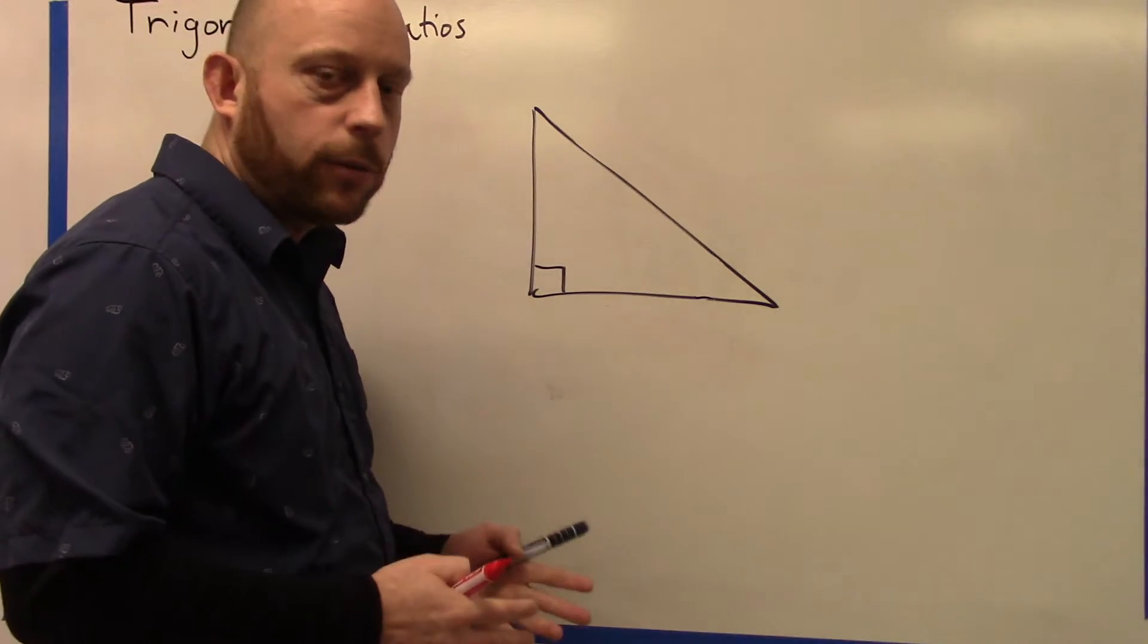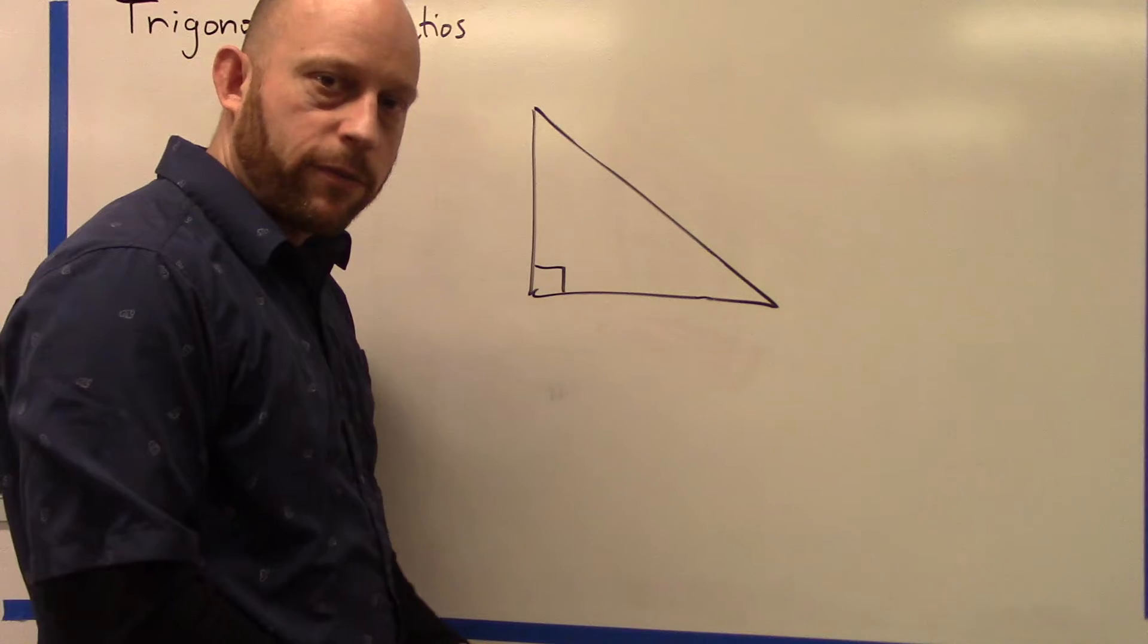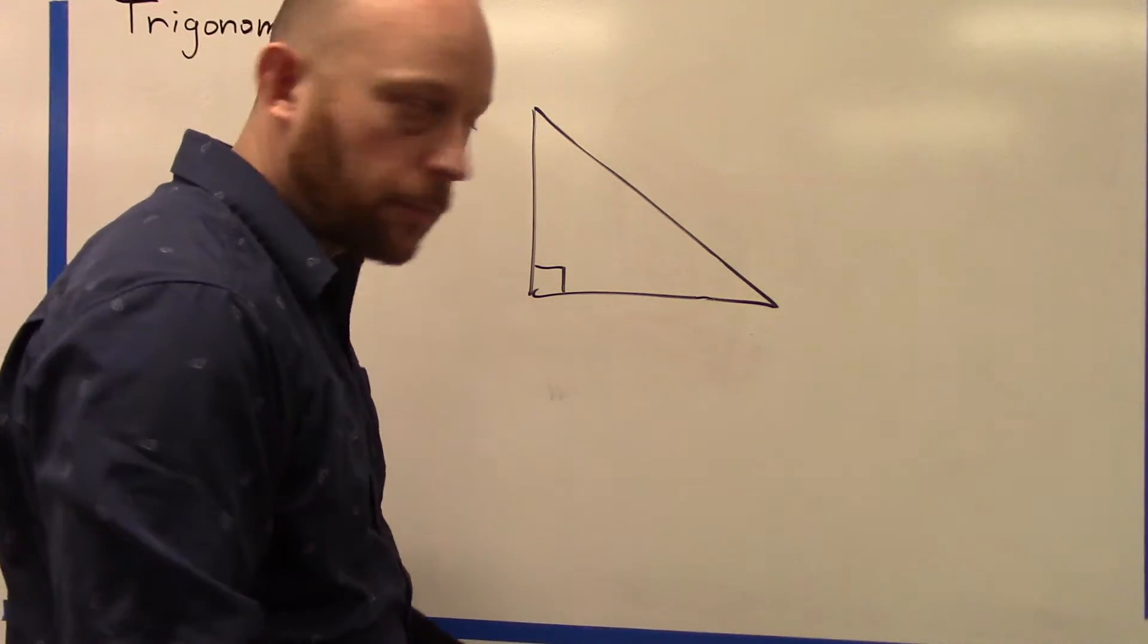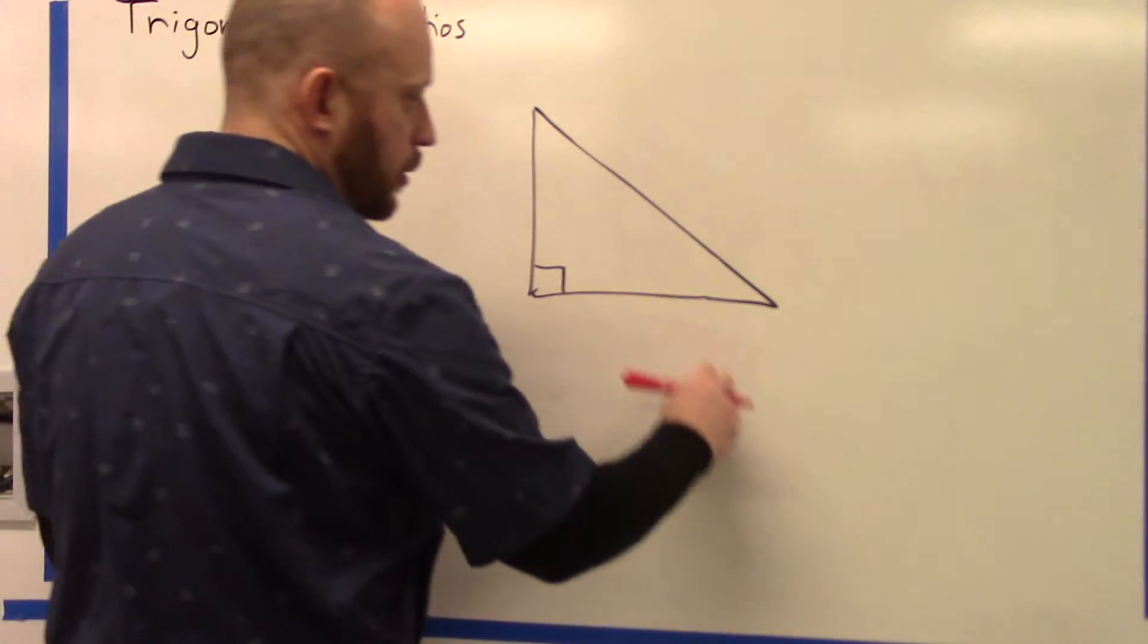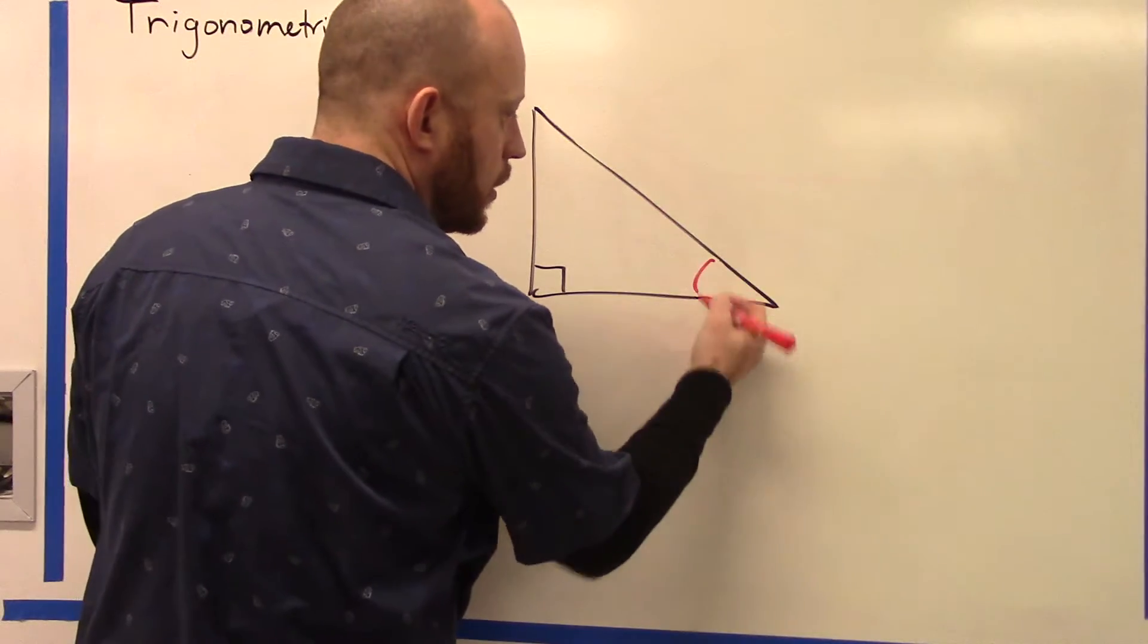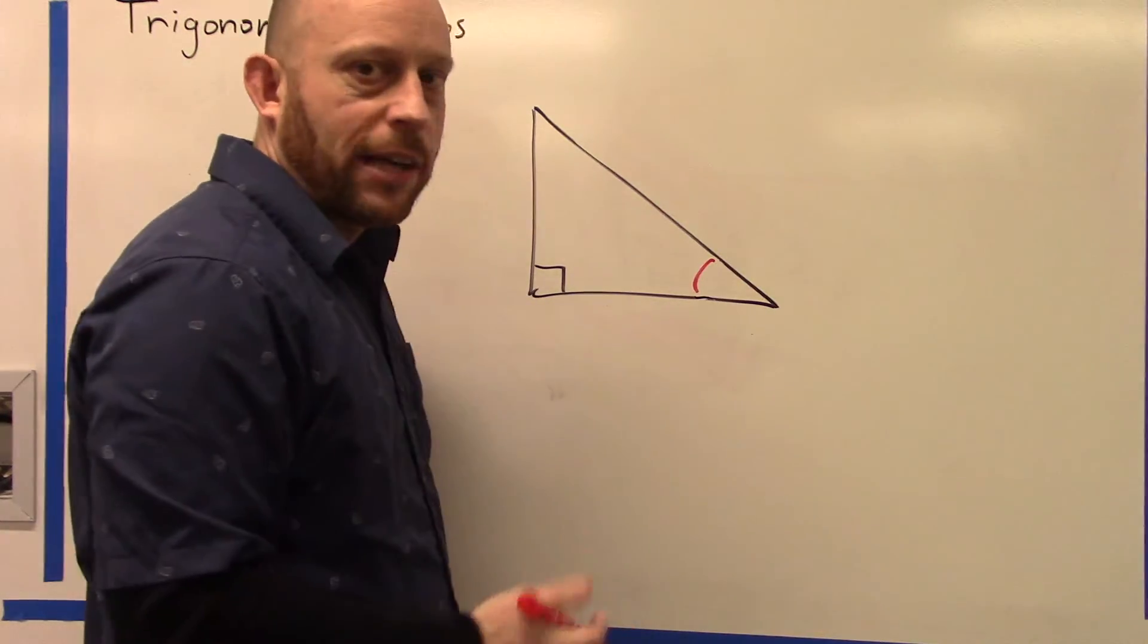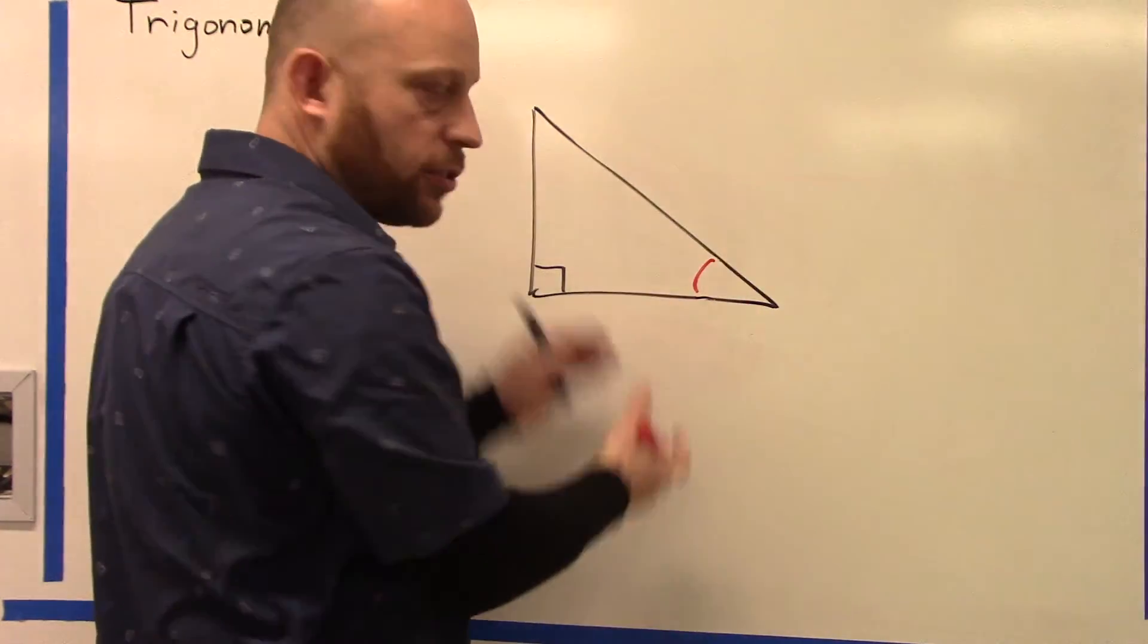To determine our trigonometric ratios, we need to decide which angle we're focusing on, and that determines the ratio setup. In this example, I'm going to be focusing on this angle, and then we need to think about how the legs of the triangle are associated to the angle.